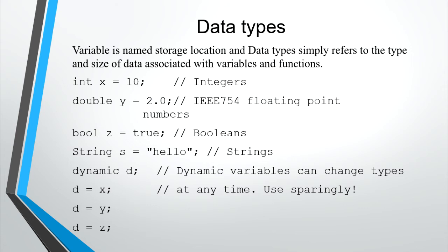And lastly, dynamic D. Dynamic variables can change types at any time. For example, D is set with a value of X. Since X is integer, the data type of D becomes integer. In our second statement, D is set to Y, so the value of D becomes double since Y has a data type of double. For our last statement, D is equal to Z. Z is boolean, so the data type of D becomes boolean.